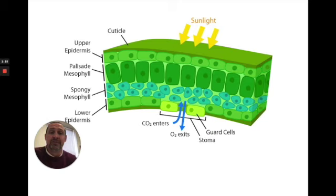which is a byproduct, a waste product of photosynthesis, to leave. Water also leaves through that small opening called a stomata. Guard cells can open and close that opening depending on the environmental conditions.